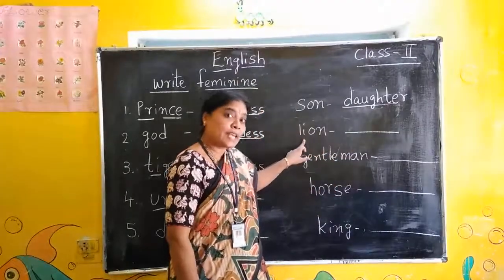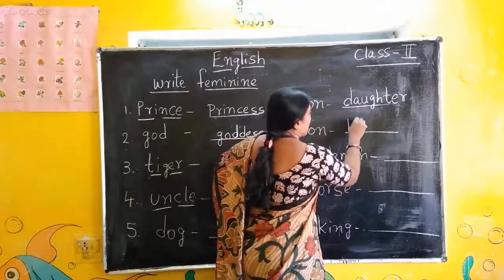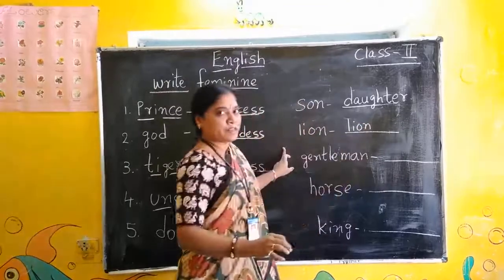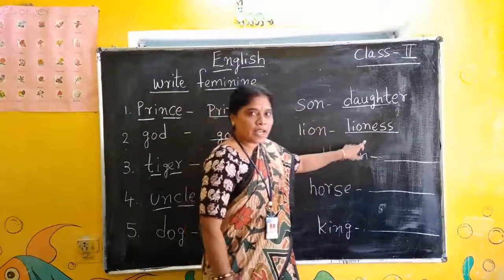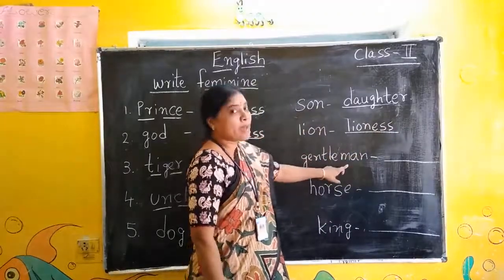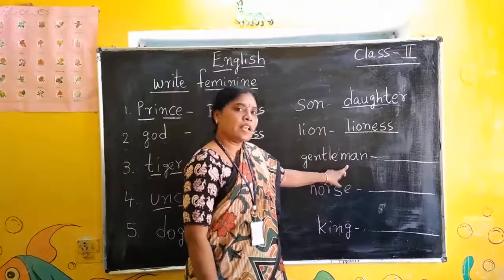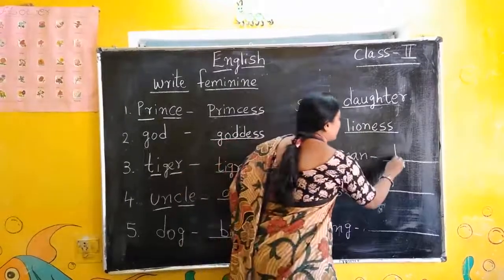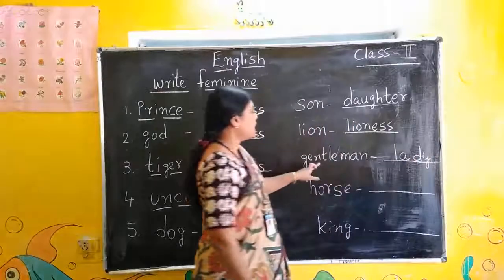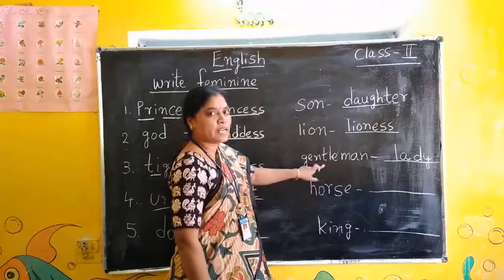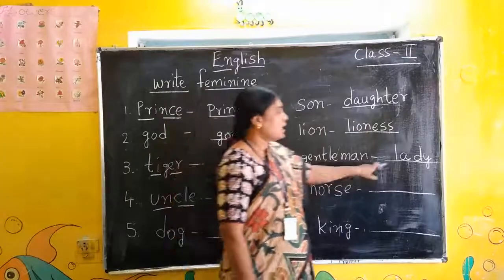Lion — Lioness: L-I-O-N, then add E-S-S. Lion — Lioness. Gentleman — Gentle lady, or we can write Lady also. L-A-D-Y, Lady. Gentleman — Lady.